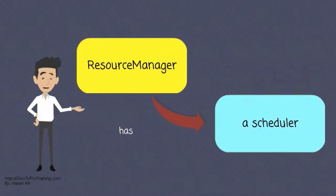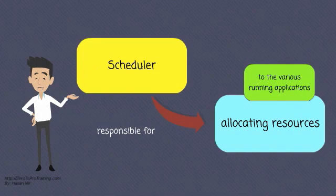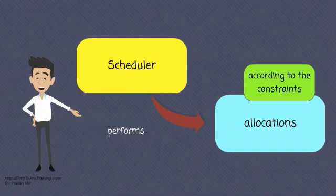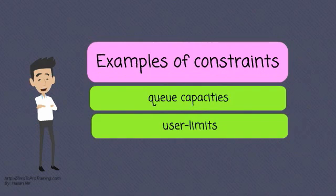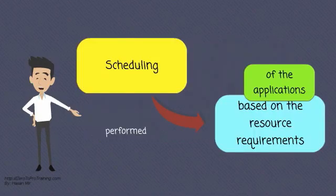The Resource Manager has a scheduler. The scheduler is responsible for allocating resources to the various running applications. It performs allocations according to the constraints. Examples of constraints are queue capacities and user limits. The scheduling is performed based on the resource requirements of the applications.